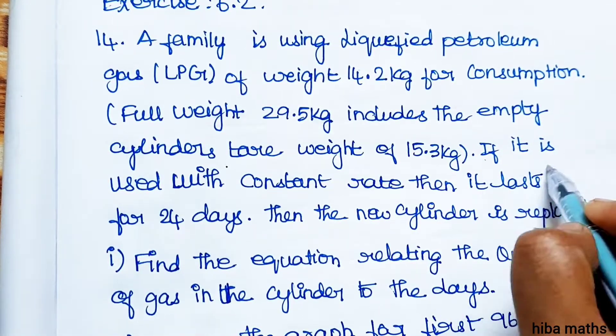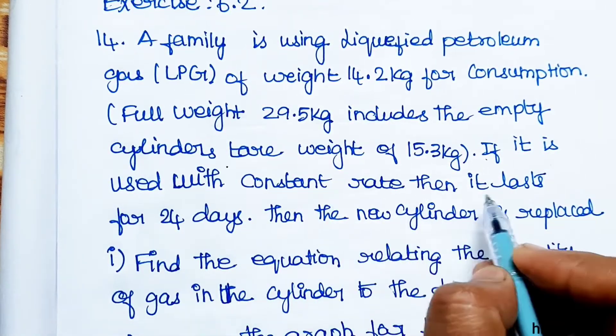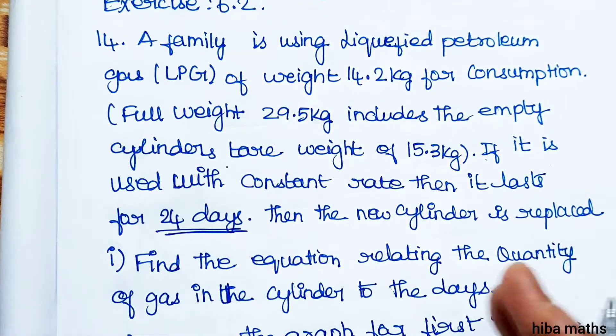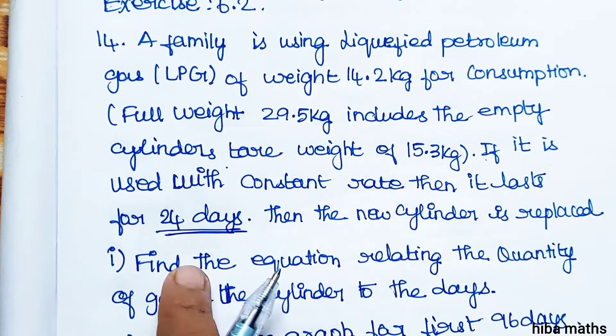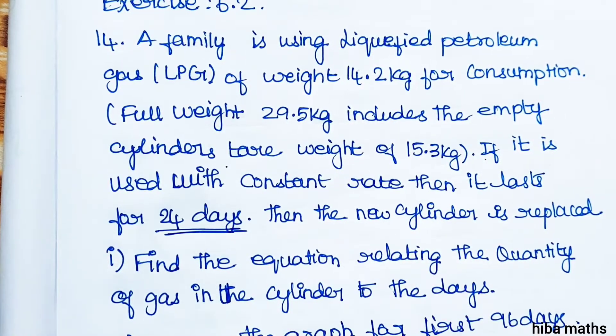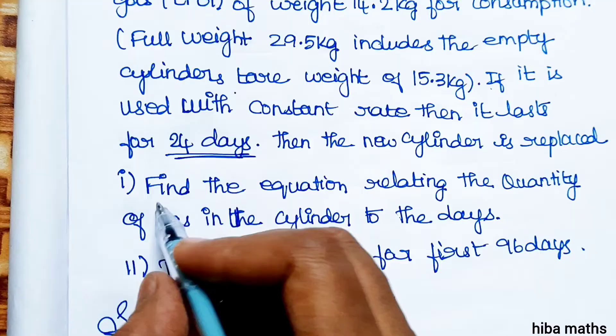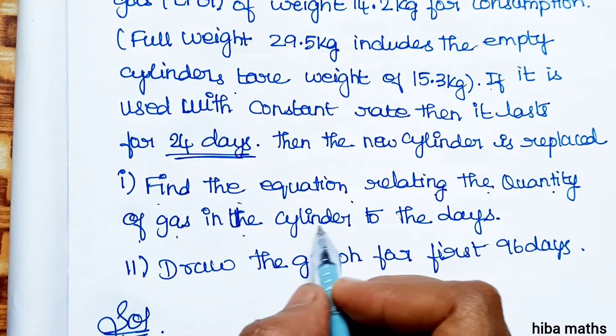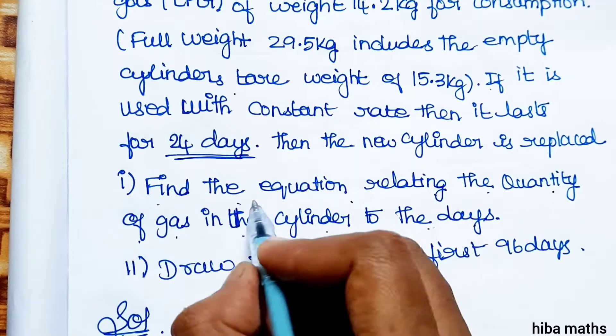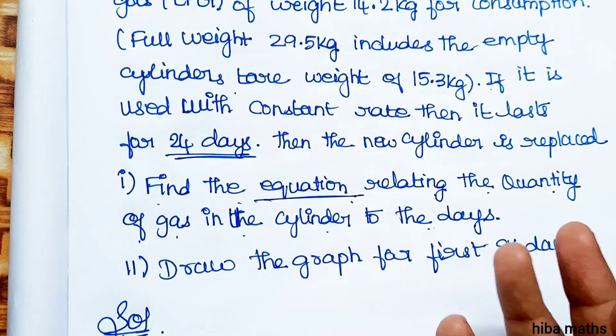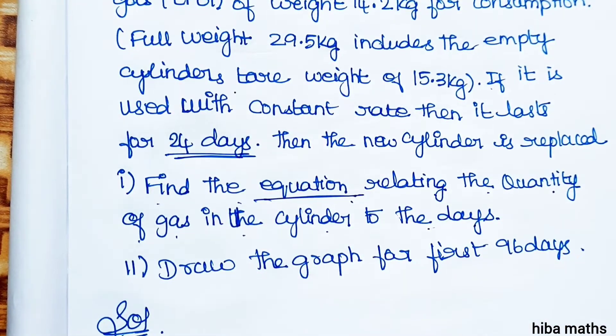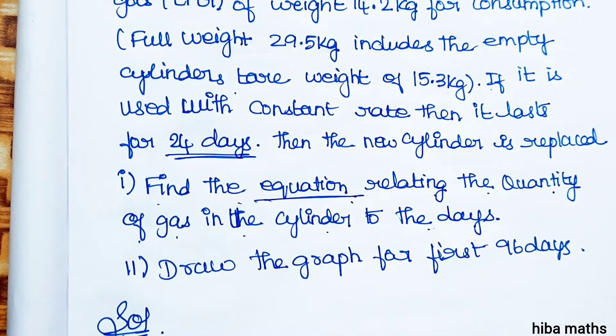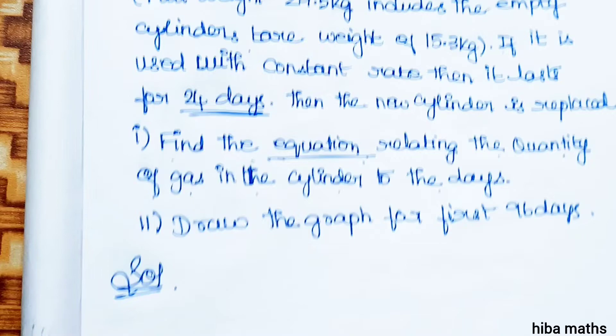If it is used with constant rate, then it lasts for 24 days, then the new cylinder is replaced. Find the equation relating the quantity of gas in the cylinder to the days. So the equation will relate the gas in the cylinder and the number of days.